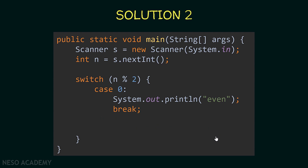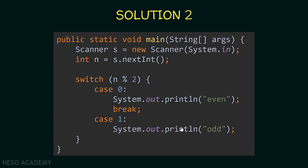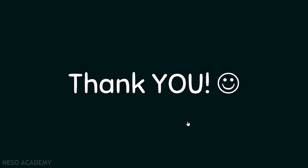Now let's have a look at another solution without using the default case. I'm going to put case 1: if n modulo 2 is equal to 1, I will print 'odd'. As you can see I don't have a break statement over here because the switch statement ends there, so I don't need a break statement. So this is it — thanks for watching and I'll see you in the next video.